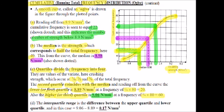Finally, part D wants us to find the interquartile range - that's the difference between the upper quartile value and the lower quartile value. The upper quartile strength is 9.06 N/mm² and the lower quartile strength is 8.89 N/mm². Taking one from the other we get 0.17 N/mm². So we've now used our cumulative frequency curve to answer the questions posed.